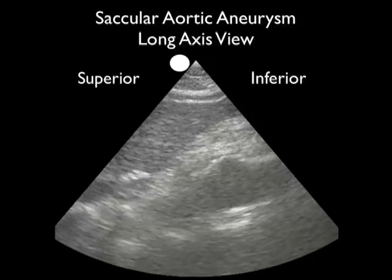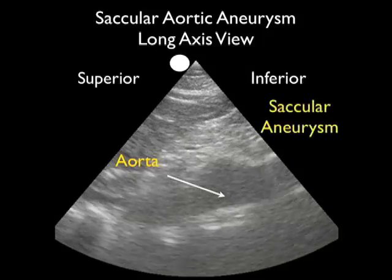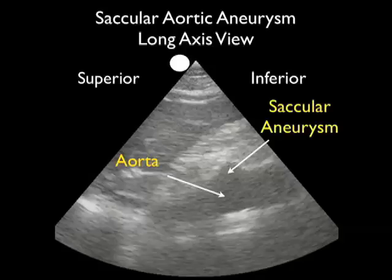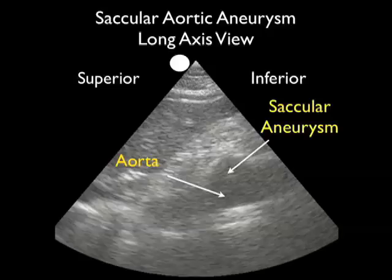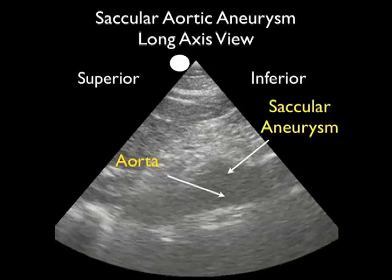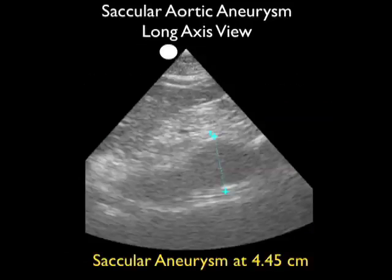This is a rare video clip showing a saccular abdominal aortic aneurysm in a patient who presented to the ED with epigastric abdominal pain. With the probe in long axis configuration, we see the aorta running from left to right and an outpouching coming anteriorly — that's the saccular aneurysm, measuring 4.45 centimeters. As the patient was symptomatic with epigastric pain over this aneurysm, she went directly to the operating room for operative repair.